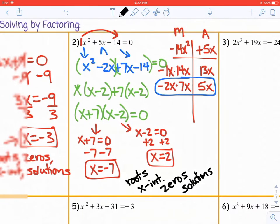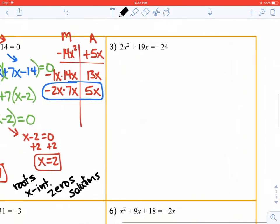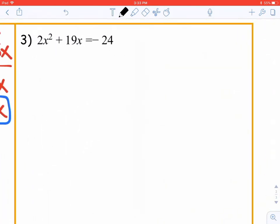Now let's take a look at one more for this video, and then we'll do some more in a separate video. In this example, we have 2x squared plus 19x equals negative 24. So the first thing to do is get everything on one side. We'll have 2x squared plus 19x plus 24 equals 0.